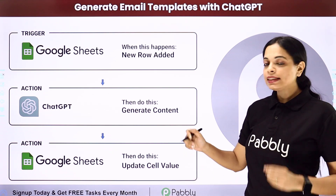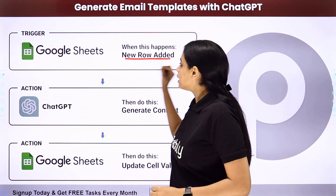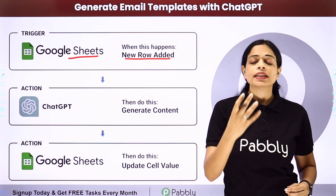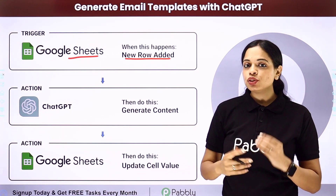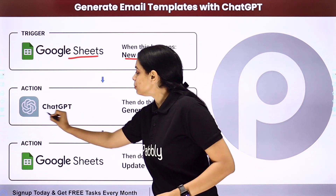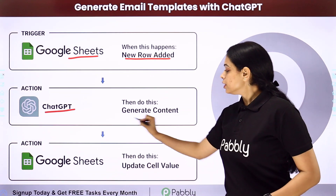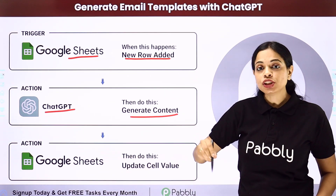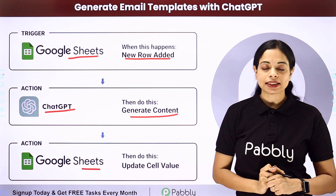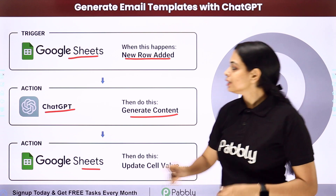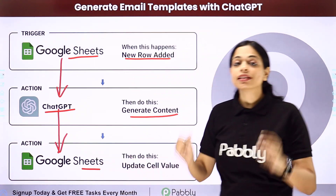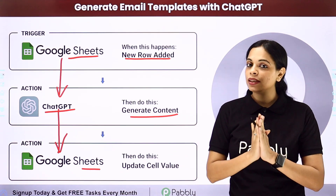Every time a new row is added in your spreadsheet — we have taken the example of a Google Sheet with a new title — you have to develop the email template. With the help of ChatGPT, the content should be automatically generated, and then the same sheet should be updated with the content just created. This can be done using Pabbly Connect software.